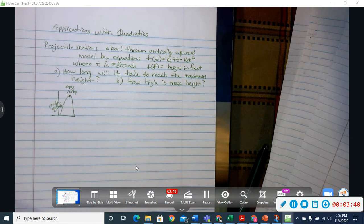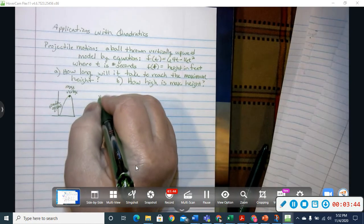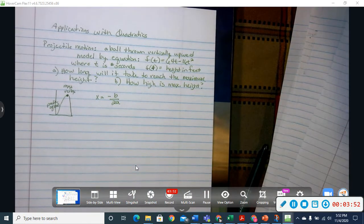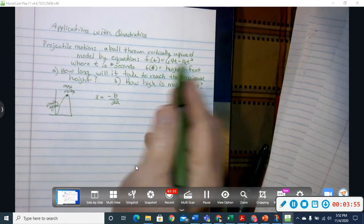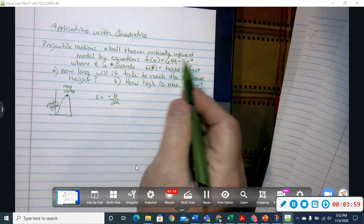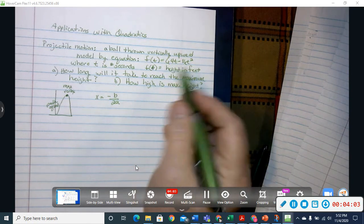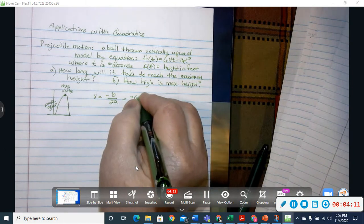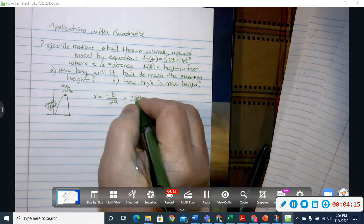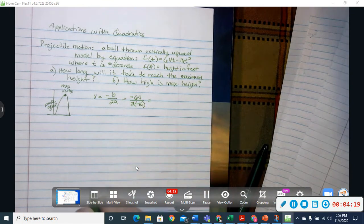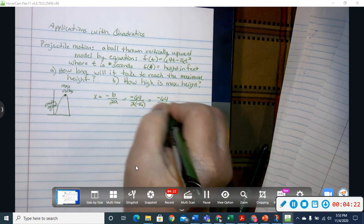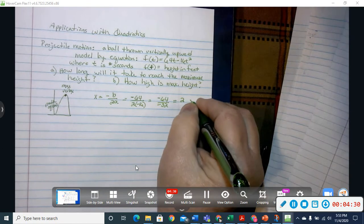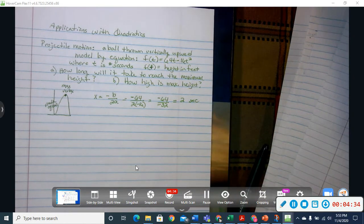So the first thing we do is define x equals negative b over 2a and that's going to give us our number of seconds by finding x. In this equation the b is 64 and the a is negative 16, so we have the opposite of b which is negative 64 and 2 times a, so 2 times negative 16 is going to give us negative 64 over negative 32 which is going to give us positive 2. So that means that it takes us 2 seconds for the ball to reach the maximum height.